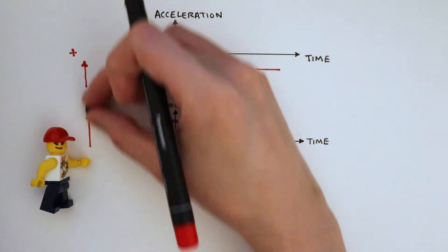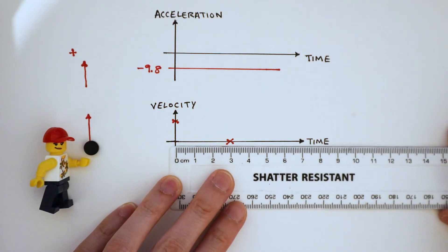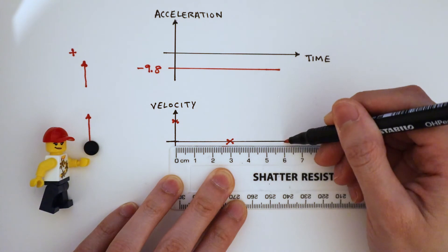We also know that the time for the ball to go up is equal to the time it takes for it to come down. The graph will end somewhere here.